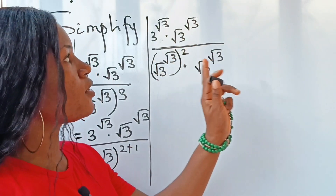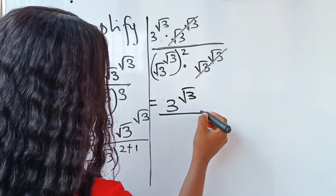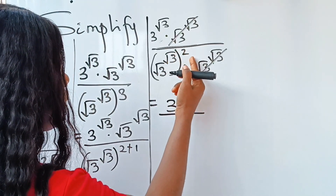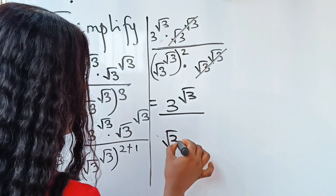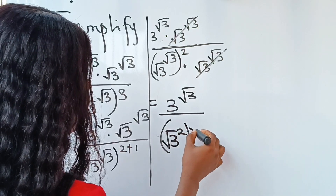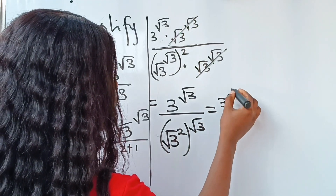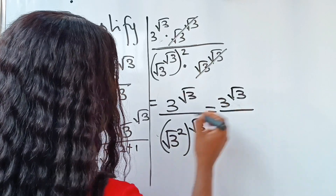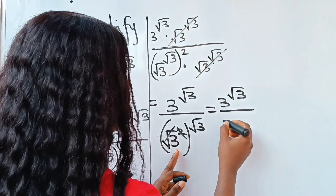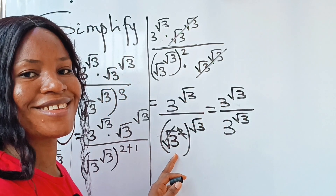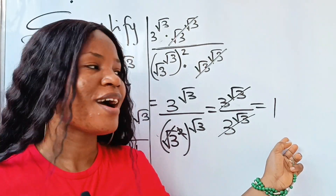What we have now is 3 to the power of root 3, multiplied by root 3 to the power of root 3, in the numerator. In the denominator, when the square meets the square root they cancel out, leaving 3 raised to the power of root 3. Dividing, the answer becomes 1.